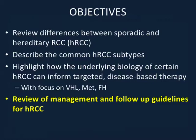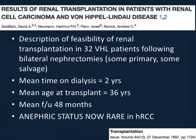Finally, I'd like to talk about management and follow-up guidelines for hereditary RCC. Early papers from the mid-to-late 1990s described renal transplantation in patients with VHL disease where nephron-sparing was not feasible, leading to bilateral nephrectomies and end-stage renal disease. The American Society of Transplant Surgeons has guidelines stating that after bilateral nephrectomies for hereditary RCC, patients must wait two years before being eligible for a transplant — and almost 20 years ago, the mean time on dialysis was exactly that, two years. The anephric status is now extremely rare in hereditary RCC syndromes in the era of nephron-sparing.